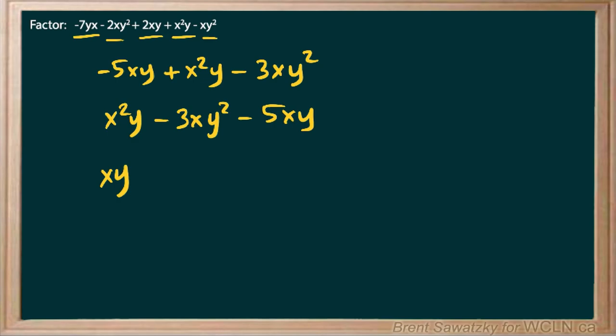The y, we have a y, a y squared, and a y. So again, the lowest power is just a y. So having the xy out front, that looks sensible.